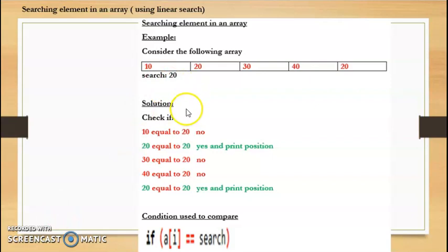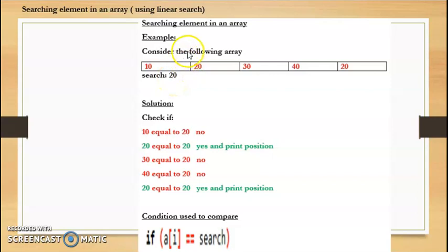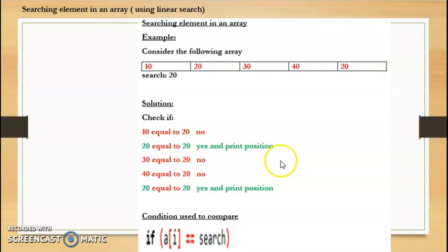To solve this, we will compare each array element with the element to be searched. First we check if 10 is equal to 20. We know that 10 is not equal to 20, so it will move on to the next element. Then it will check if 20 is equal to 20 — yes, 20 is equal to 20, so it will print that 20 is present at position 2.